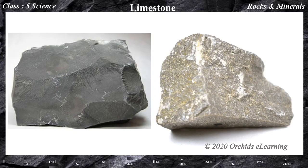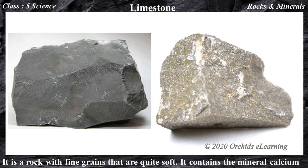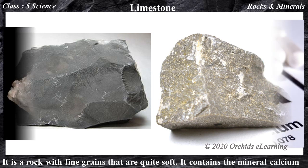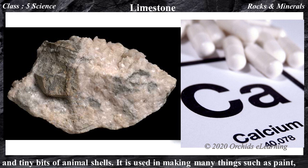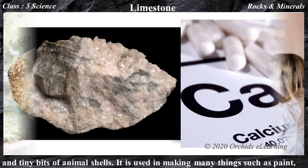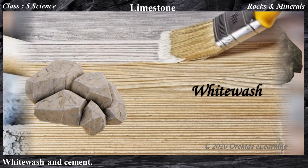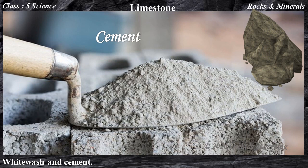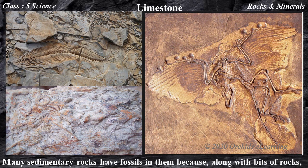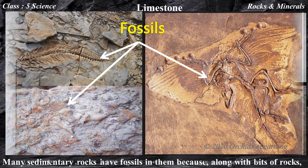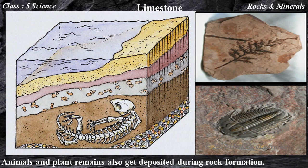Limestone — it is a rock with fine grains that are quite soft. It contains the mineral calcium and tiny bits of animal shells. It is used in making many things such as paint, whitewash, and cement. Many sedimentary rocks have fossils in them because, along with bits of rocks, animals and plant remains also get deposited during rock formation.